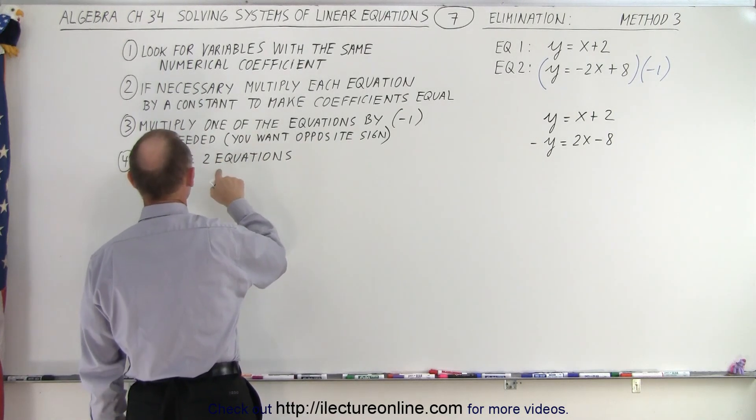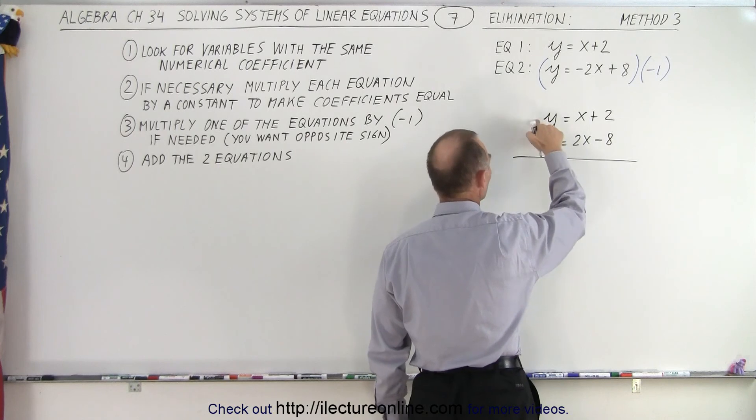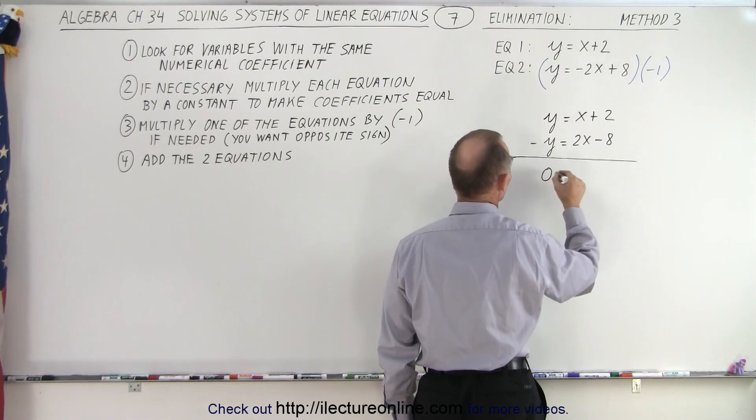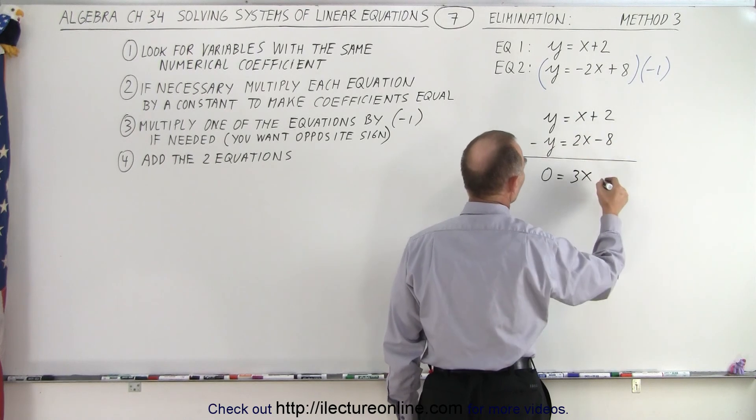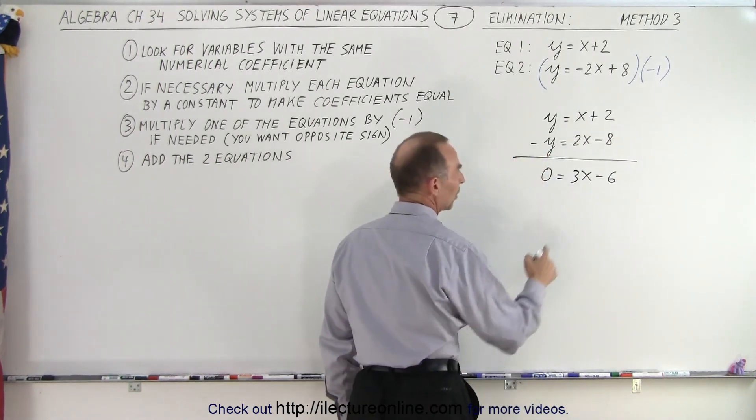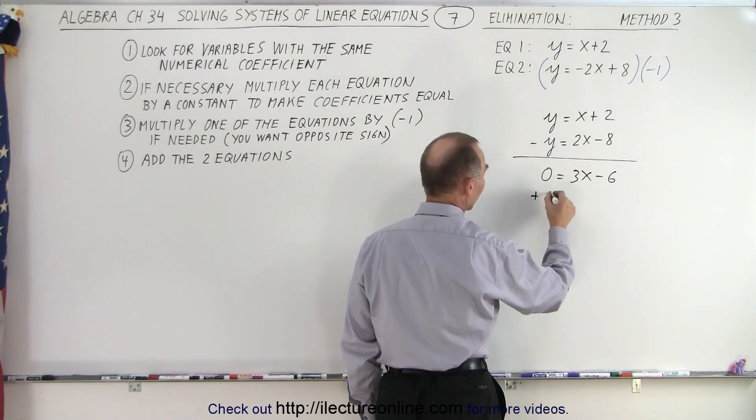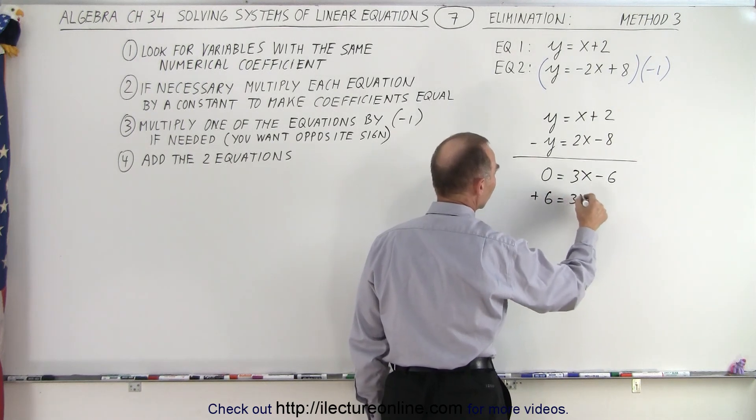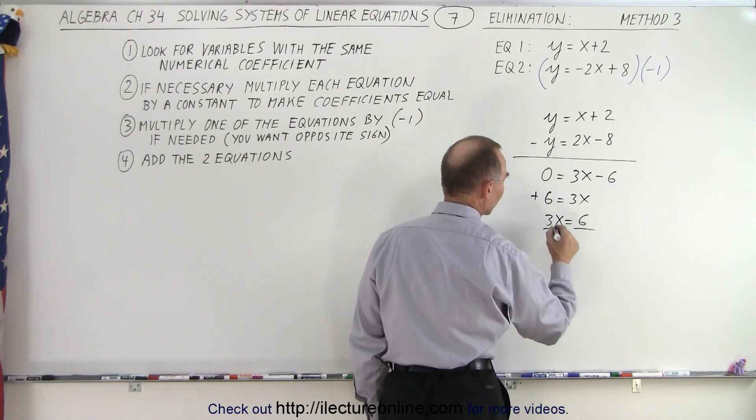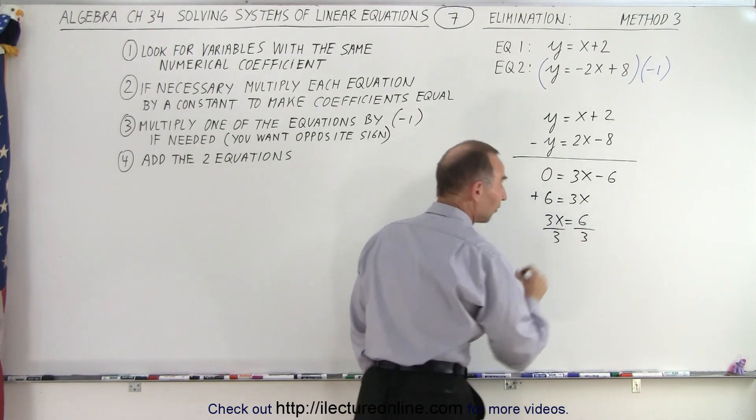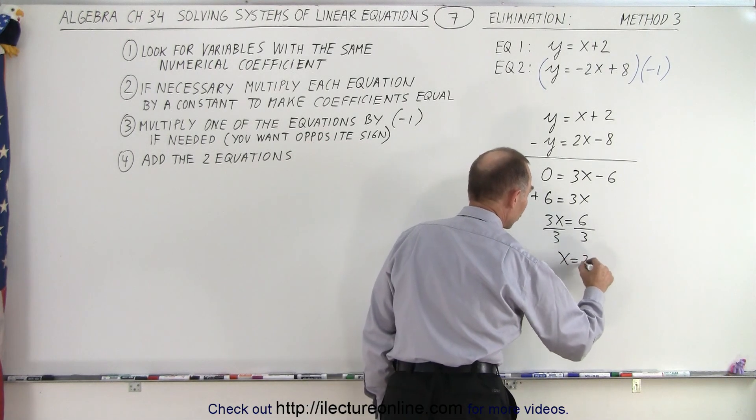Now, I can go to step number 4. I can add both equations. So I add a positive y and a negative y. That gives me 0 equals x plus 2x gives me 3x. And 2 minus 8 gives me minus 6. So now moving minus 6 to the other side, minus 6 becomes a plus 6. Plus 6 equals 3x. Or 3x equals 6. Now we divide both sides by the numerical coefficient in front of the x. That means we now have x is equal to 2.